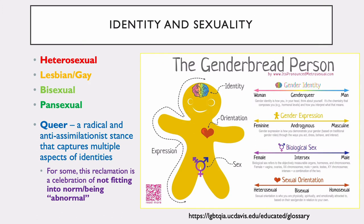When it comes to a person's identity and their sexuality, the two do not have to be connected, but they often are. A person can be sexually attracted to the opposite sex, to the same sex, to both sexes, to any sex. Being queer is seen as a radical and anti-assimilationist stance that captures multiple aspects of a person's identity. For some, this reclamation is a celebration of not fitting into the norm. What you can see here is a graphical depiction of identity — gender orientation, sex, how it's expressed overall. These are spectrums — there's no particular place a person has to align across all of these different spectra. These things vary across people and across different societies and cultures.